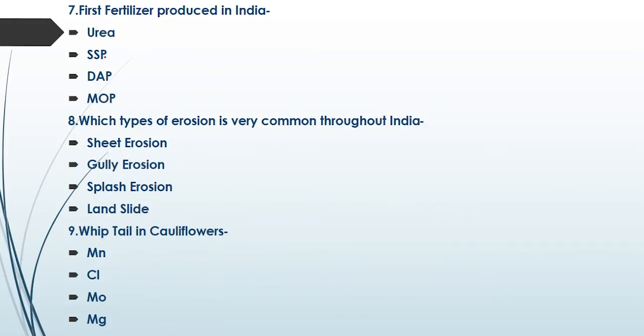The next question: which fertilizer was first produced in India? The answer is SSP — Single Super Phosphate.